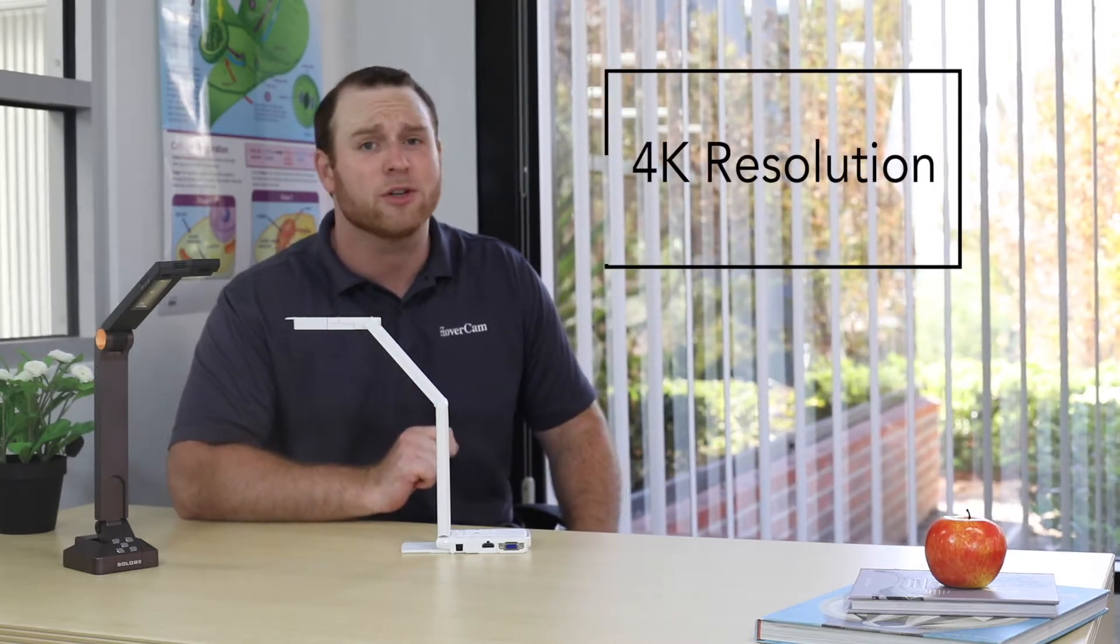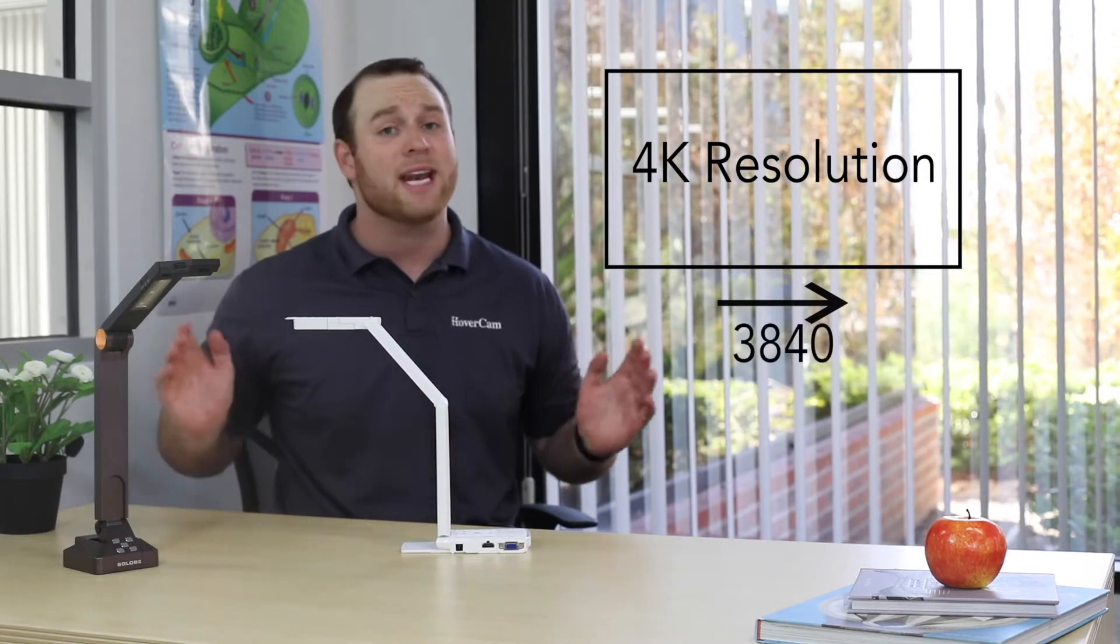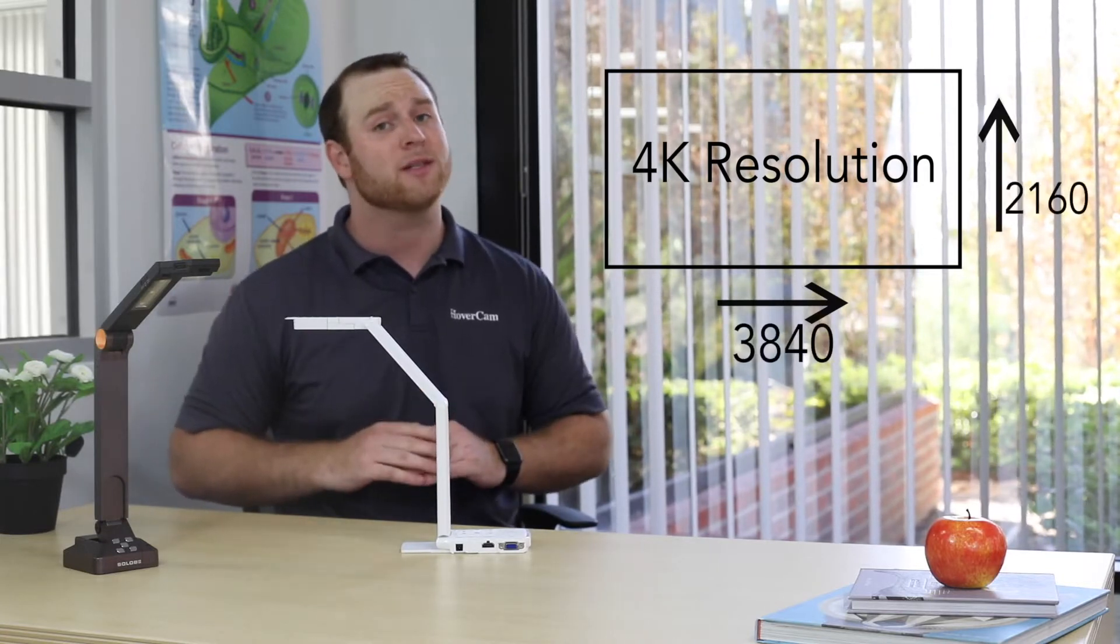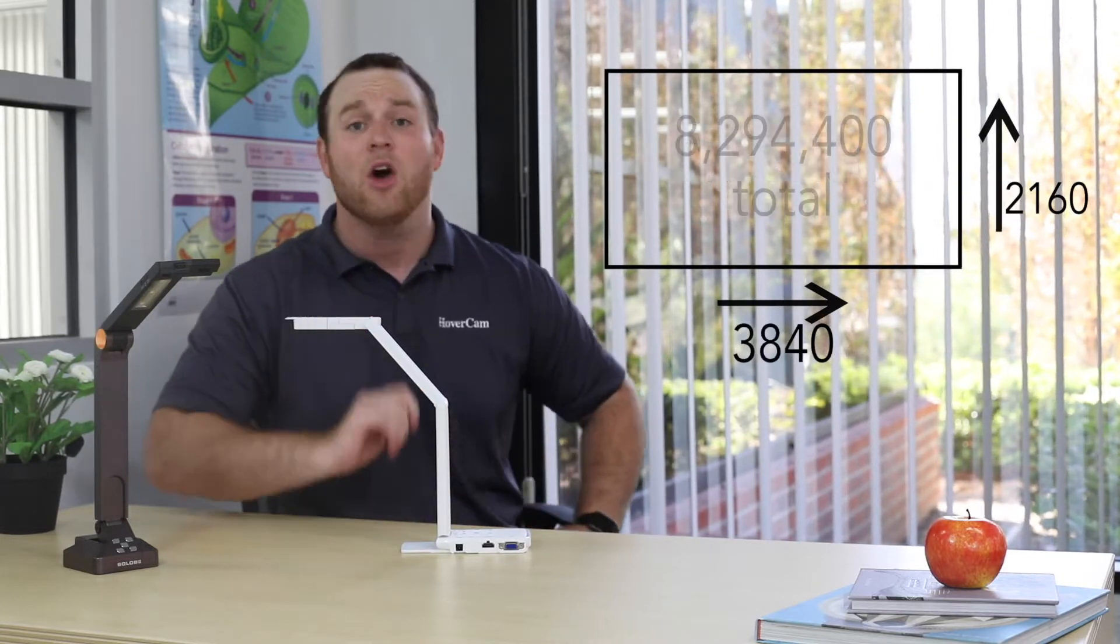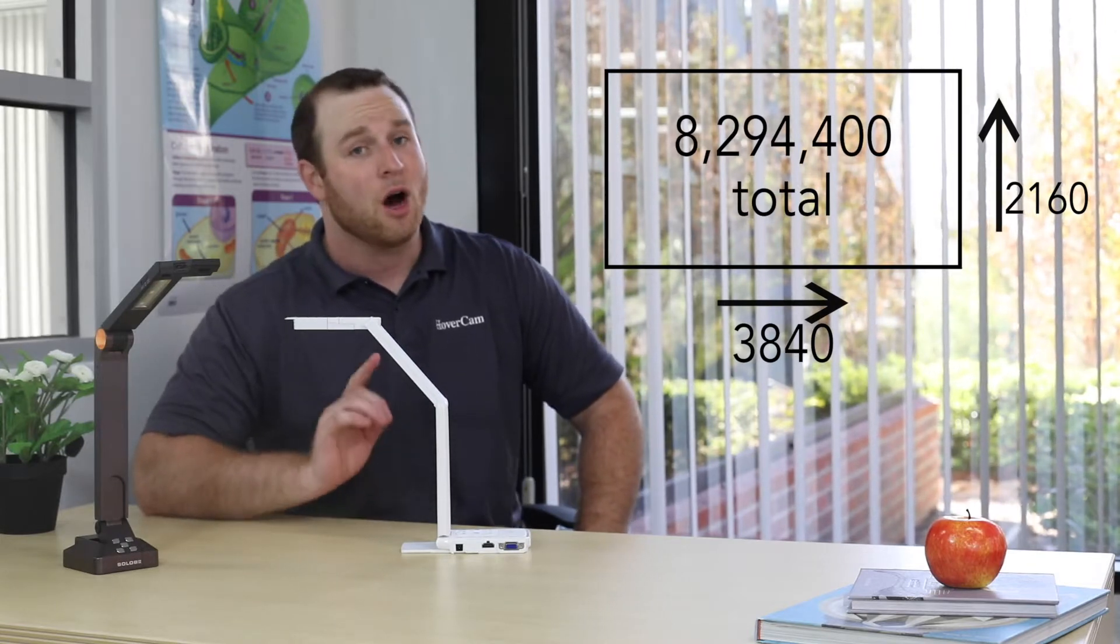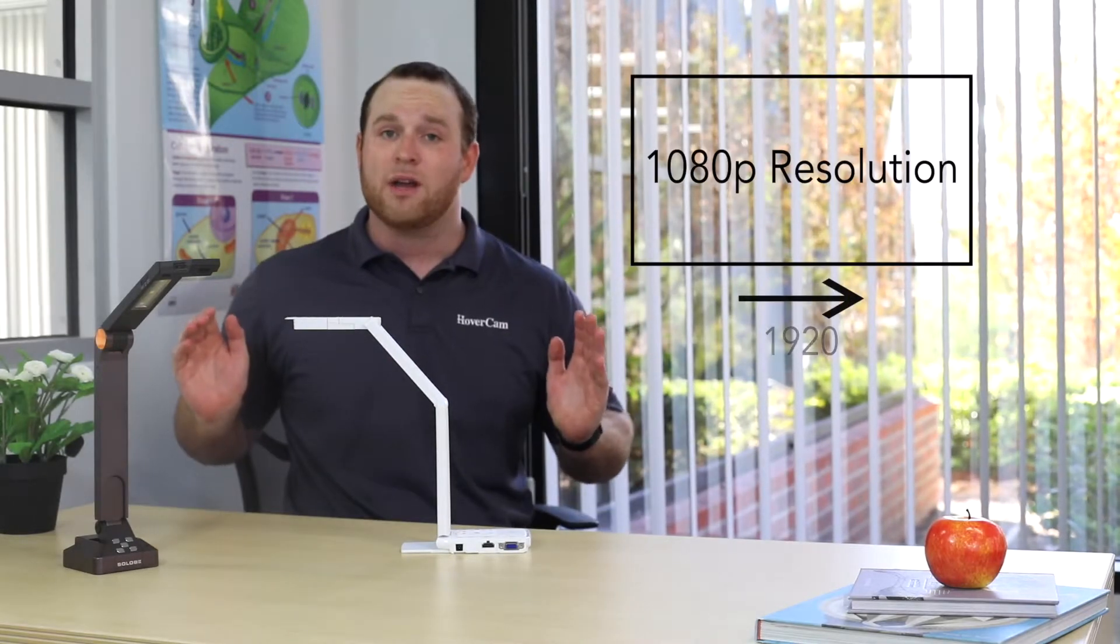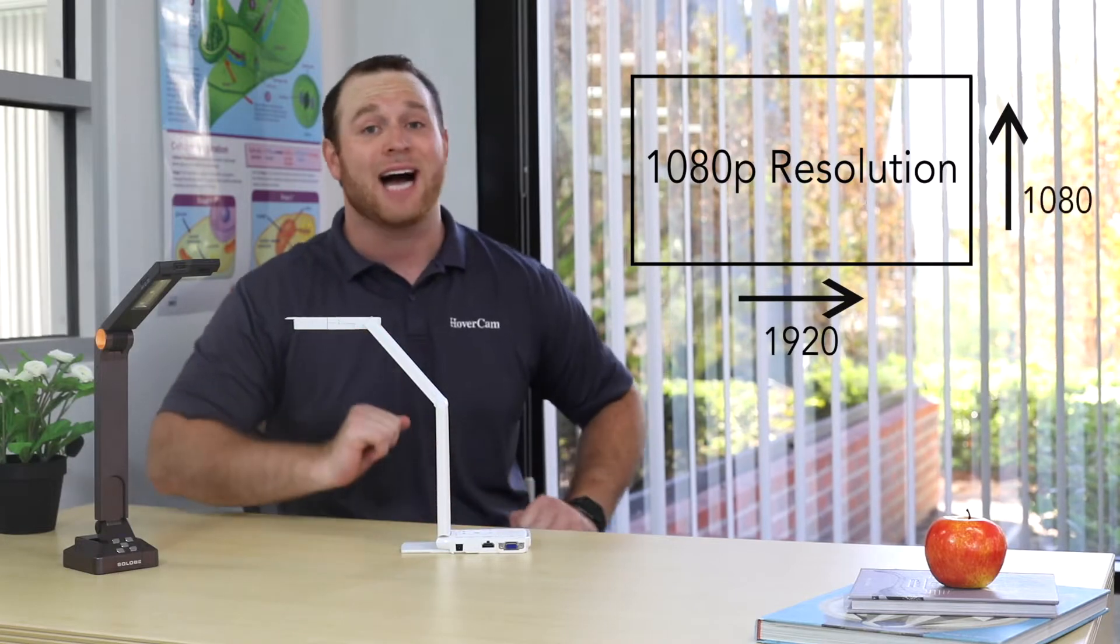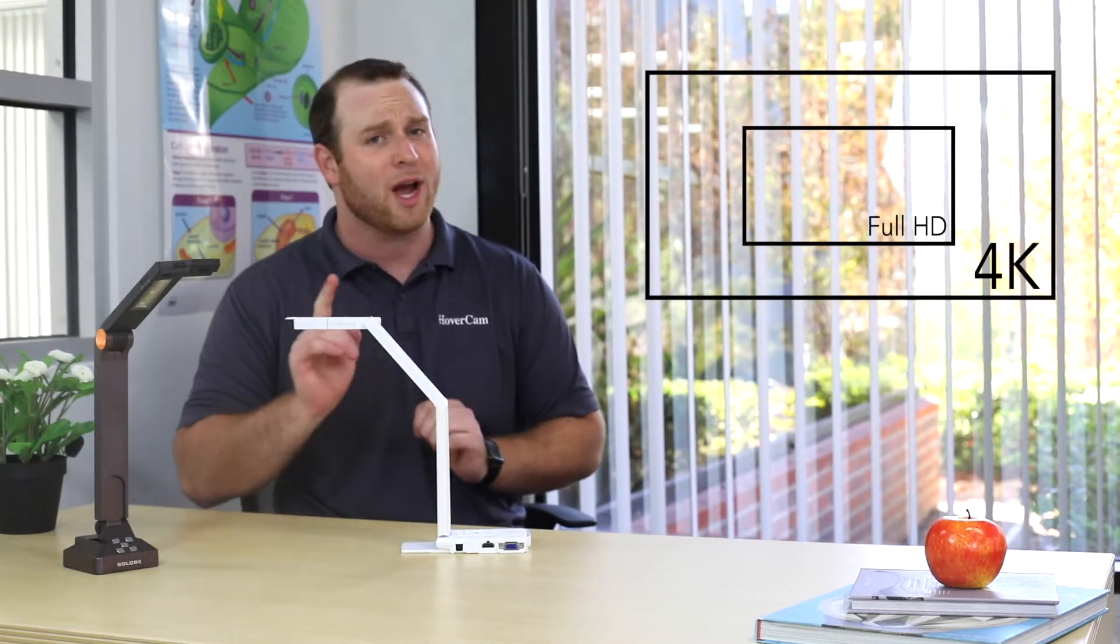4K resolution typically refers to an image that is 3,840 pixels wide, 2,160 pixels high, which equates to over 8 million pixels total. Full HD is 1920 pixels wide and 1080 pixels high, giving us 2 million total pixels. So 4K is four times bigger than Full HD, therefore you should want a 4K resolution document camera, right?